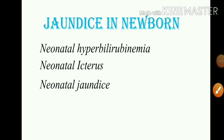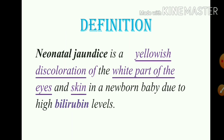Jaundice in newborns — neonatal jaundice, neonatal hyperbilirubinemia, neonatal icterus. Neonatal jaundice is a yellowish discoloration of the white part of the eyes and the skin of a newborn baby due to high bilirubin levels. That is neonatal jaundice.